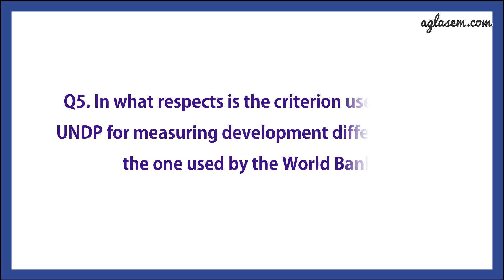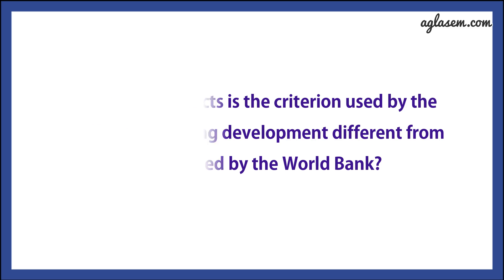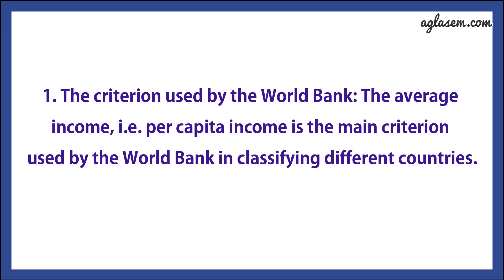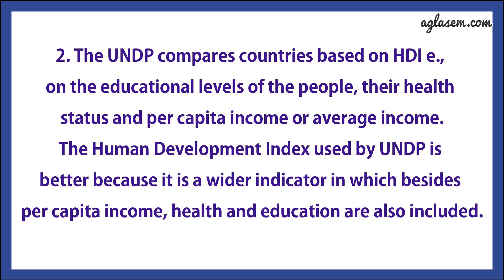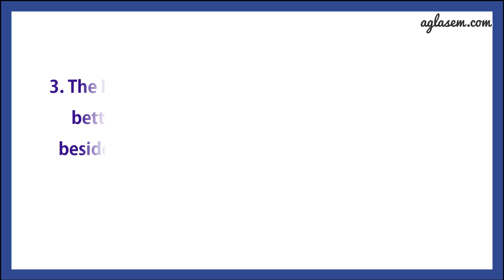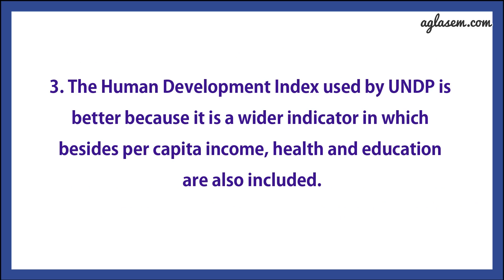Question number 5 says: in what respects is the criteria used by the UNDP for measuring development different from the one used by the World Bank? Answer: first, the criteria used by the World Bank is the average income, i.e. per capita income, as the main criteria for classifying different countries. Second, the UNDP compares countries based on HDI — that is, on the educational level of the people, their health status, and the per capita income, or the average income. Third, the Human Development Index used by UNDP is better because it is a wider indicator in which, besides per capita income, health and education are also included.